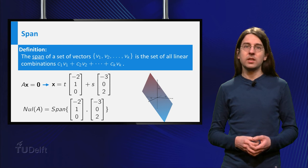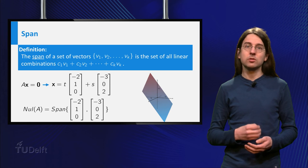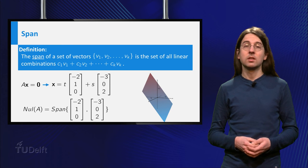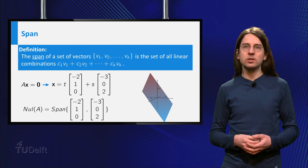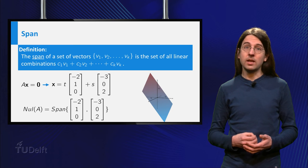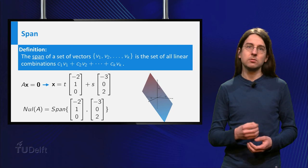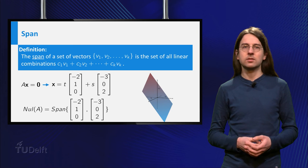So all linear combinations of these vectors must also be in the subspace. The span is the smallest set of vectors you can have which includes v1, v2, etc., and which still is a subspace.